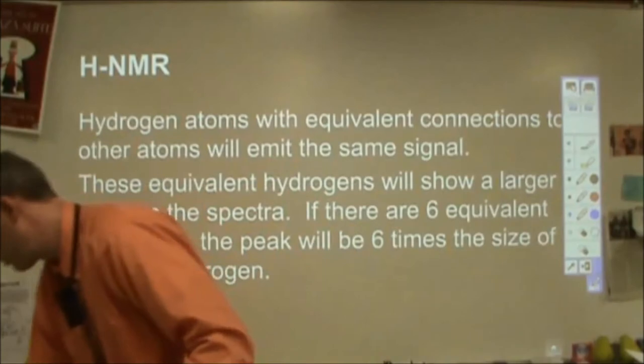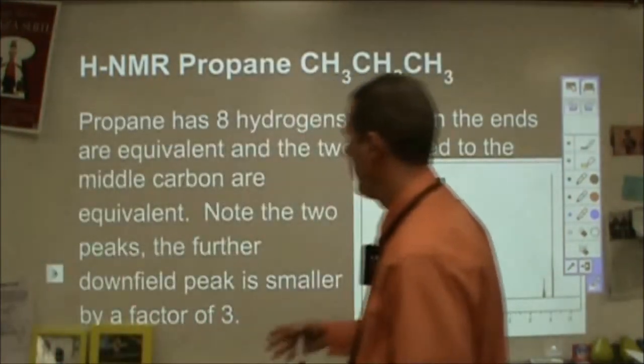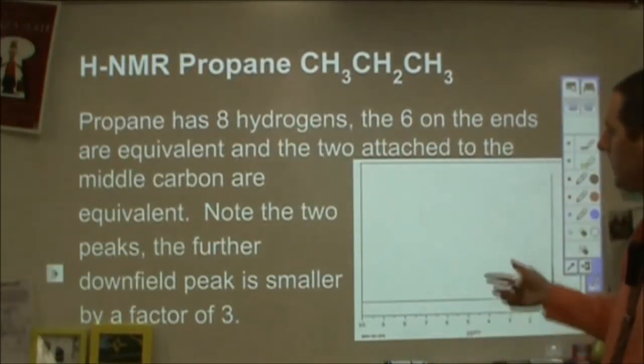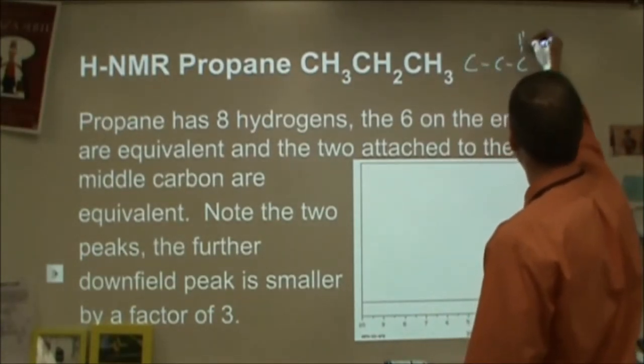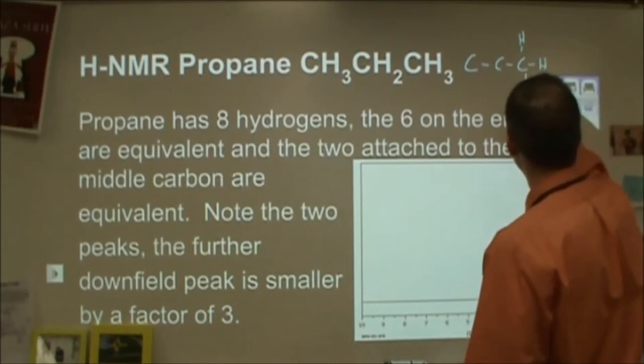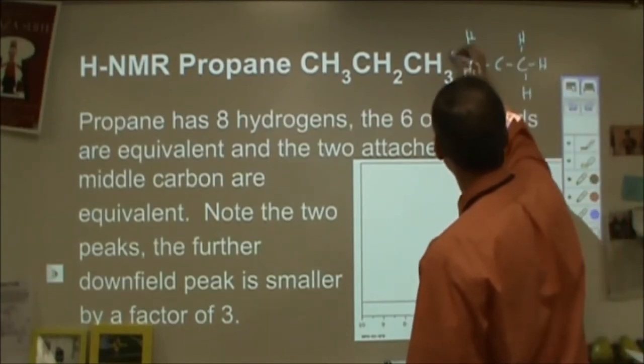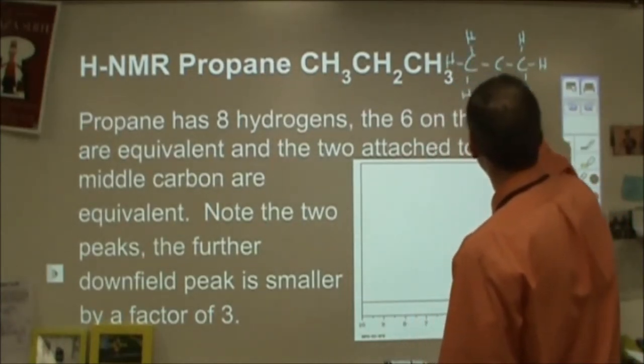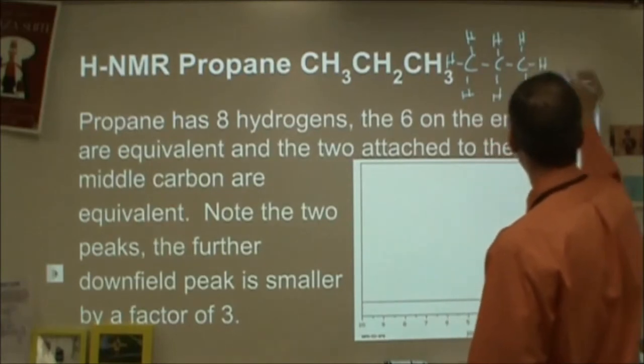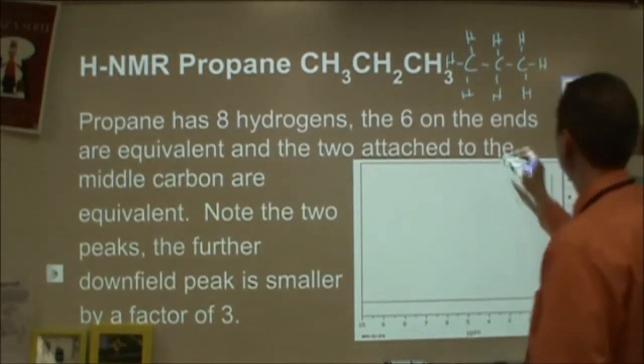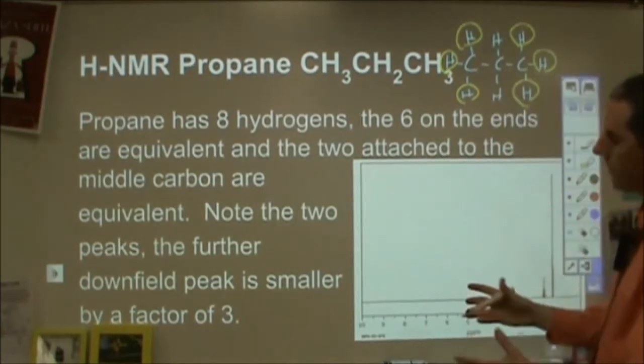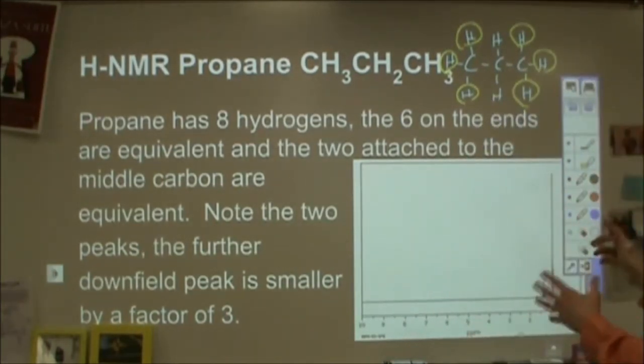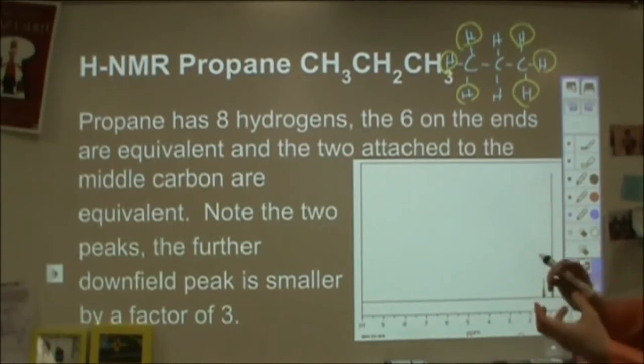And so we'll look at some examples that kind of show that. Now here is an NMR of propane, CH3-CH2-CH3. So if I draw that out, I have three carbons, three hydrogens on this one, three hydrogens on this one, and two on the center. So eight hydrogens total, but these six are all equivalent to each other. So in the basis of symmetry of that molecule, there's no distinguishing any of those six from each other. And if you were to build that molecule, you'd be able to see that really well.